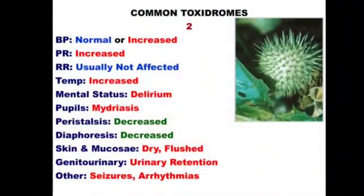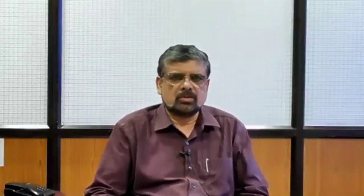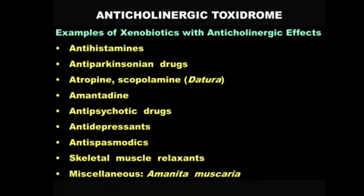Toxidrome number two is exactly a mirror image — the opposite of toxidrome one. Almost every manifestation is reversed. This is the anticholinergic toxidrome. The examples form a large list: anticholinergic drugs including antihistamines, anti-parkinsonian drugs, atropine, belladonna alkaloids, antipsychotics, antidepressants, antispasmodics, skeletal muscle relaxants, and some mushrooms — an important and extensive list.